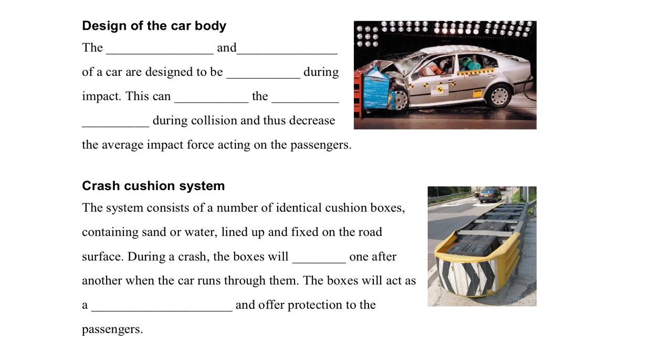Design of the car body. If you watch a car accident, usually you will find that the car will be collapsed after its impact. Actually, it's a kind of design. The front section and the rear section of the car are designed to be crumpled during the impact, so it can increase the impact time during the collision, so that it can reduce the average impact force acting on the passengers.